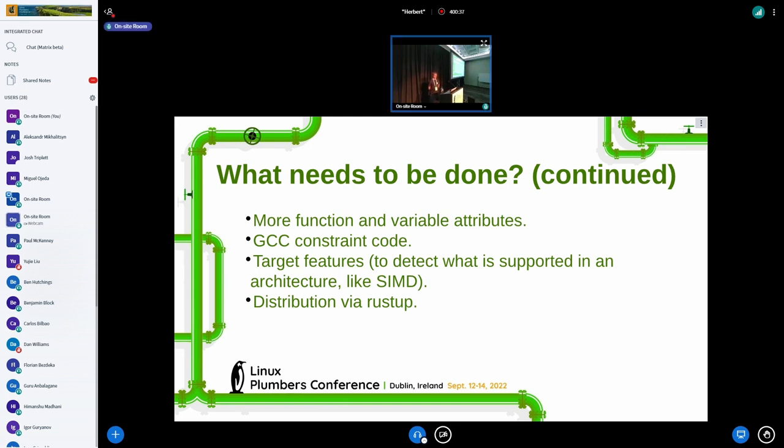And, we need to support the SIMD instructions for other targets than X86. So, there's a bunch of function and variable attributes that are not implemented yet. For instance, inline, to have a function that is going to be inlined. We don't support a couple of GCC constraint codes in inline assembly. And, there's also the – we will also need to support even more when we add more architectures to the Rust compiler. Also, we need to implement the CPU target detection to know, for instance, if some SIMD features are implemented in the CPU. And, also, we'd like to do the distribution via rustup of the GCC code gen so that it's easier for users to install.